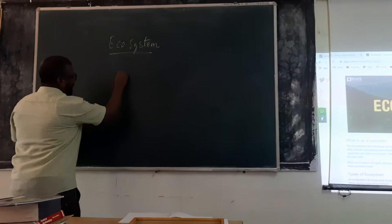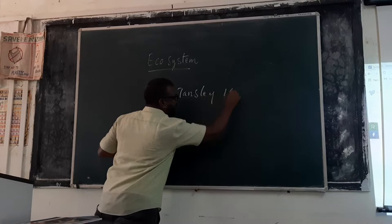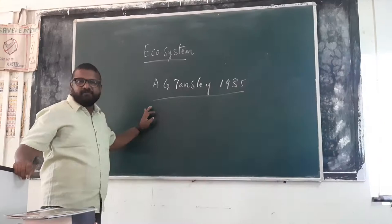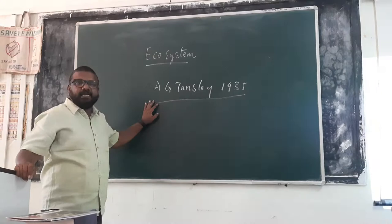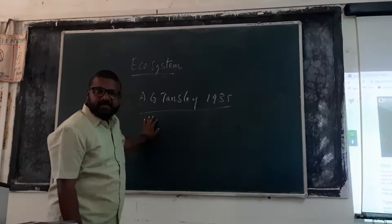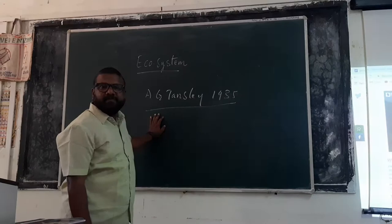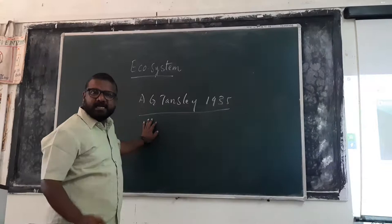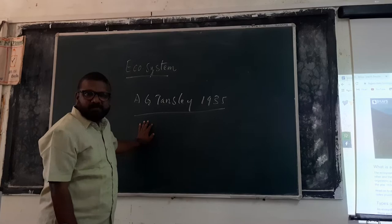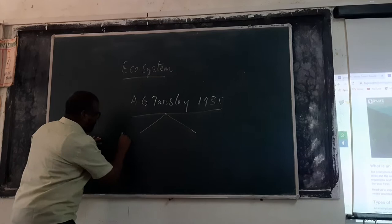The term ecosystem was derived by A.G. Tansley in 1935. Various scientists define ecosystem in different ways, but A.G. Tansley defines ecosystem as the interaction between a living and a non-living component. He says the ecosystem can be small or large, natural or artificial. On this basis, he classified ecosystem into majorly two types.